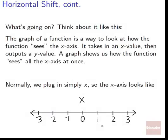To understand this: a graph shows how the function sees the x-axis — it takes in each x-value and outputs a y-value. Normally we plug in just x, so the x-axis looks like a normal number line with 0 in the middle. But we can move this number line around — we can move the home base — by plugging in x + k instead.